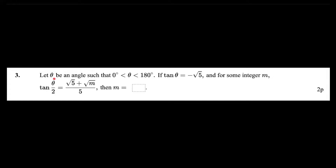The next problem: let θ be an angle between 0° and 180° strictly. If tan(θ) = −√5, and for some integer m, tan(θ/2) = (√5 + √m) / 5, then what is m? Exact values are needed.